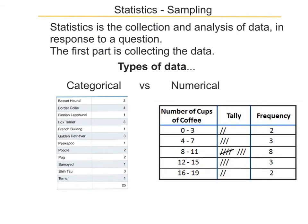Before we can use statistics to work out what we're doing with our data and to answer our question, we need to think about what sort of data we have, because that influences what you can do with it. There are two main sorts of data: categorical, where you count an object or a property of an object, and numerical data, where we're counting the number of times a number turns up — for example, the number of cups of coffee someone drinks.